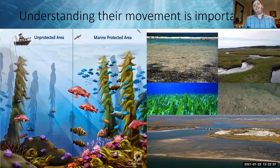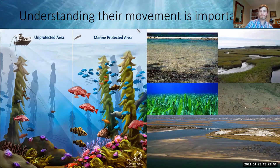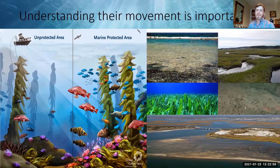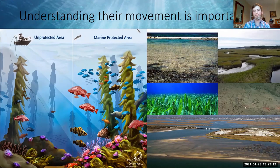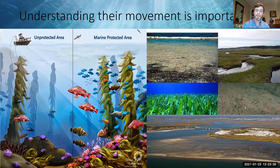Understanding horseshoe crab movement is critical because it's impossible to close the entire coastline — that would adversely impact fishermen and the economy. We must be strategic in defining important areas for protection. Understanding movement helps improve the effectiveness of protected areas and helps identify what types of habitats horseshoe crabs rely on for food, spawning, and throughout their life cycle.